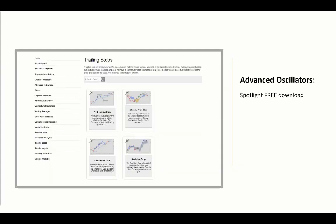With that, I'll wrap up this Indicator Spotlight of the Supertrend M11, in the trailing stop category, along with the GAN High-Low Activator and the ATR Trailing Stop. You can also find the chandelier crawl stop, the deviation stop, and Wilder's Volatility Stop — in total about 145 tools and indicators in the library, available for a one-time payment of only $150. That's not per indicator, not a monthly fee — $150 for all of them, flat fee.